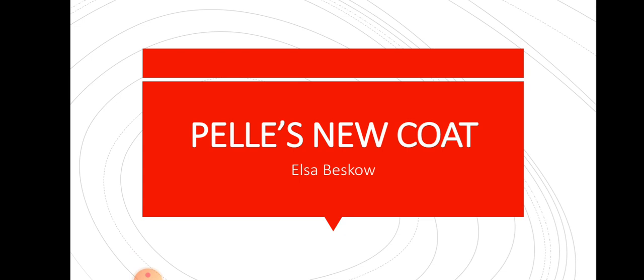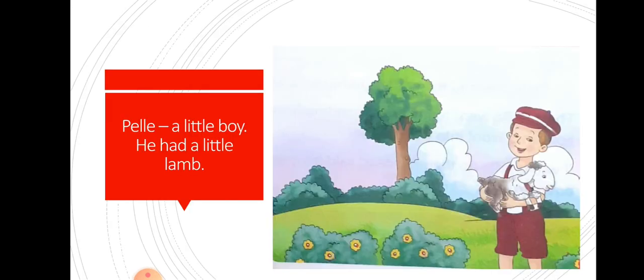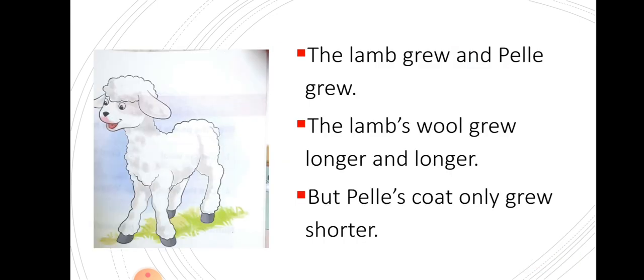Pelle is a little boy. He had a lamb. They both grew together. The lamb grew and Pelle grew, but the lamb's wool grew longer and longer every day, but Pelle's coat grew only shorter. His coat became shorter because he is growing.